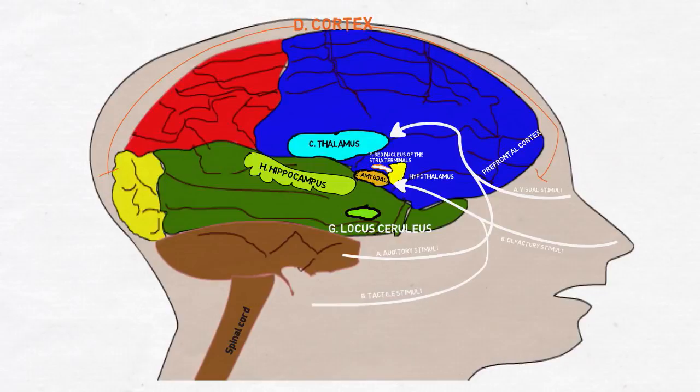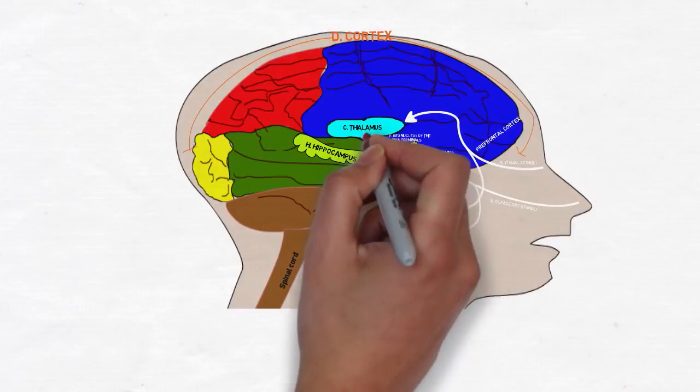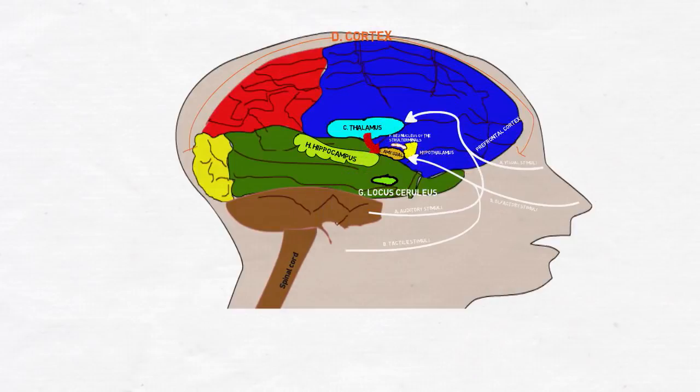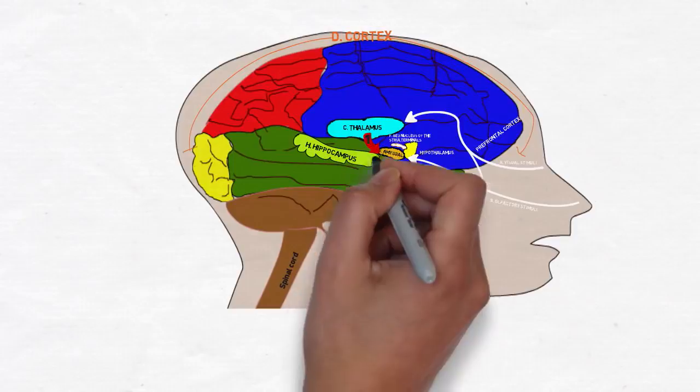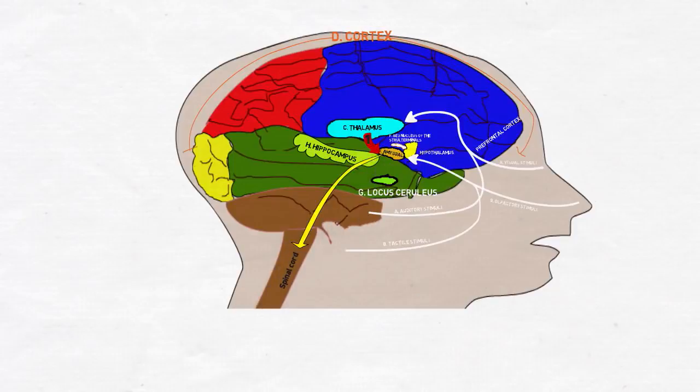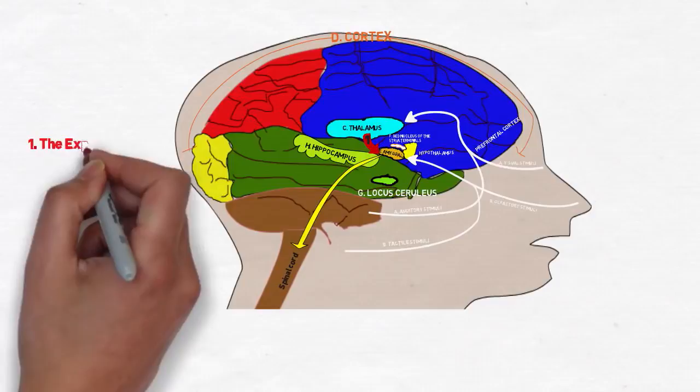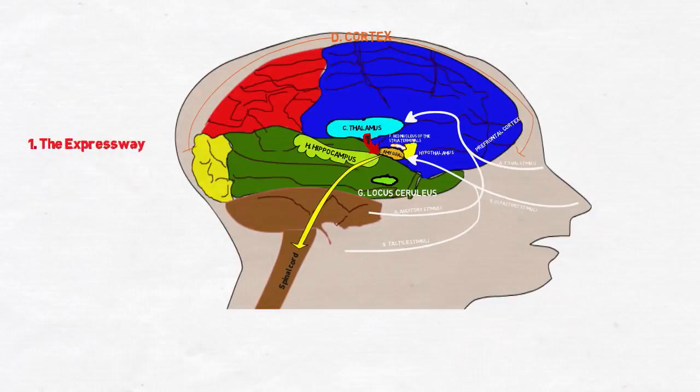Any cues from your incoming senses that are associated with a threat in the amygdala, whether that threat is real or not, current or not, are immediately processed to trigger the fear response. This is the expressway. It happens before you consciously feel the fear.